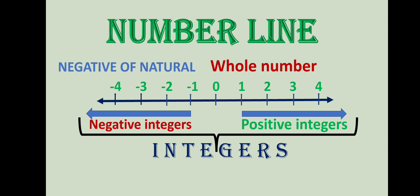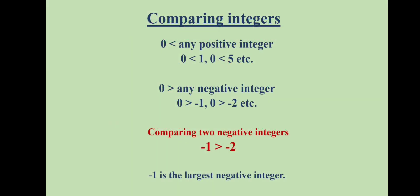What numbers are not included in the integer set? For example, one-half is a fraction — it lies between zero and one. There are more fractions between two whole numbers, and those numbers are not included in the integer set.